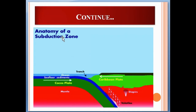Here is the anatomy of a subduction zone. As you can see, this is the Cocos Plate and this is the Caribbean Plate. When these two plates collide, these trenches are formed.